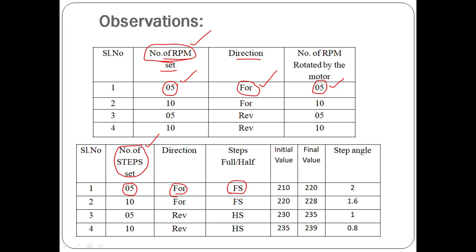For a full step setting, the motor should rotate five steps into 1.8 degrees. For example, the initial reading was 210 and the final reading reached was 220, as shown on the stepper motor display. The step angle calculated is 2 degrees in this case.